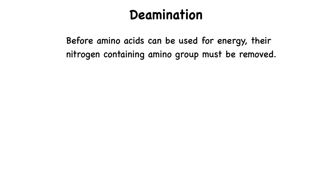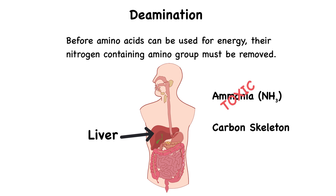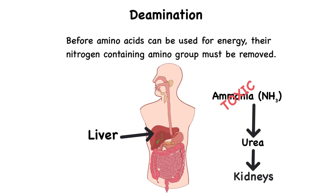Before amino acids can be used for energy, their nitrogen-containing amino group must first be removed. This process, called deamination, takes place in the liver, where the amino group is stripped away, forming ammonia and a carbon skeleton. However, ammonia is toxic to the body, so the liver quickly converts it into a safer compound, urea, which is then filtered out by the kidneys and excreted in urine. This is why protein metabolism produces more waste than carbohydrate or fat metabolism.